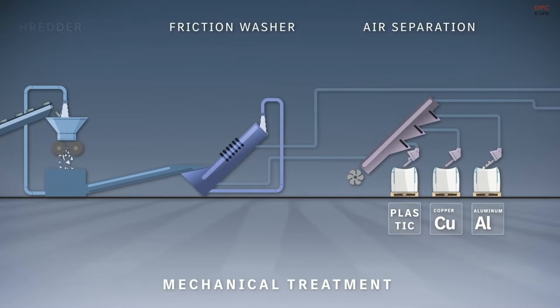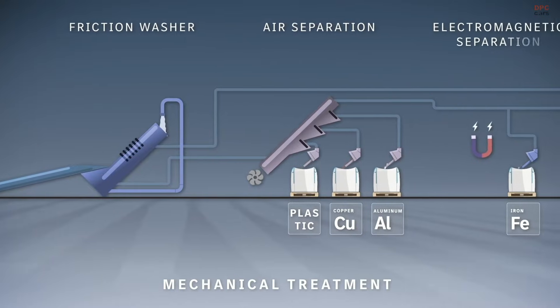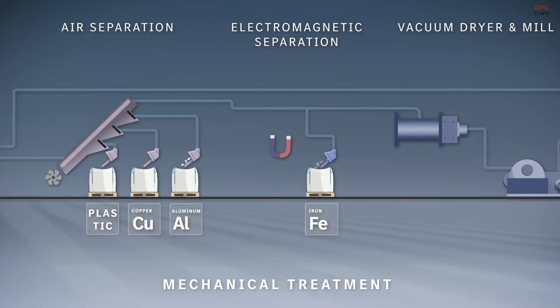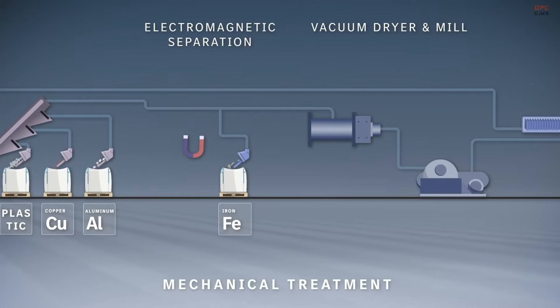Using gravity-based air systems, magnetic separators, a grinder, and various sieves, plastics, copper, aluminum, and iron are separated and packaged according to type.